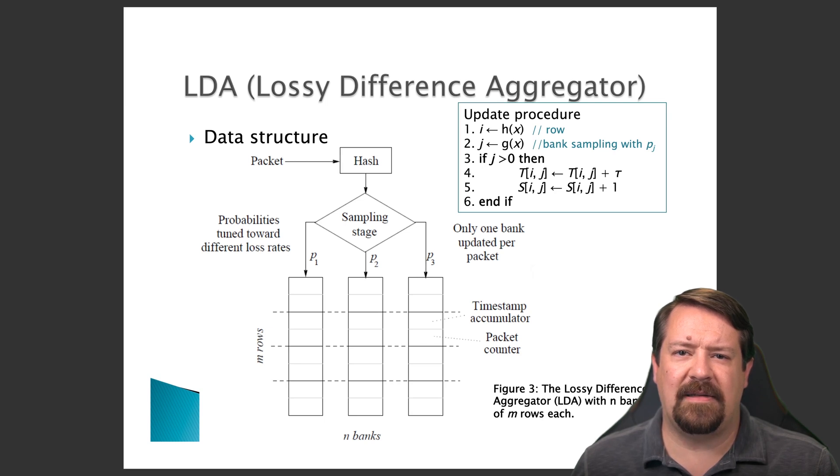So in this case, on each end of the connection, the packet is first hashed and depending on where it lands in the hash space, it is mapped into one of the three different aggregators. Each of those aggregators collects packets with the sampling rate tuned to a different loss rate.